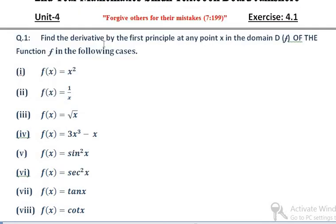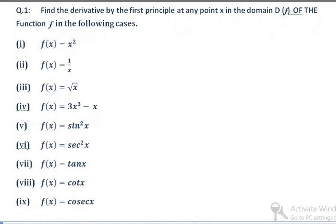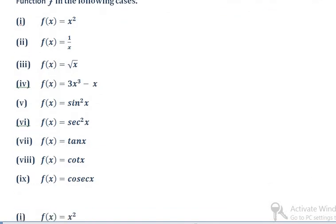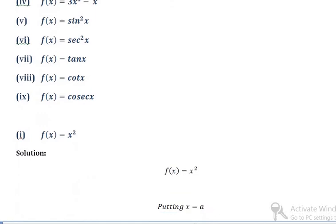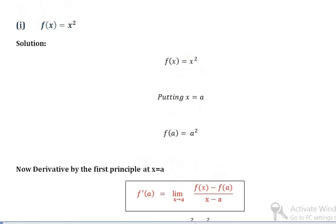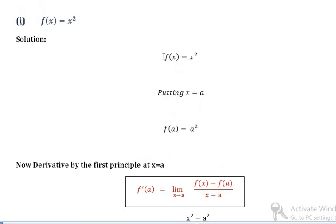Question number one: find the derivative by the first principle at any point x. In part number one, f of x is equal to x squared. We want to find the derivative by using the first principle.